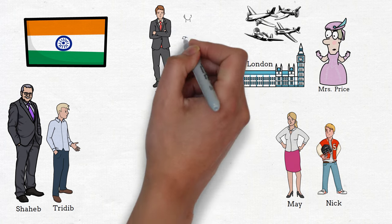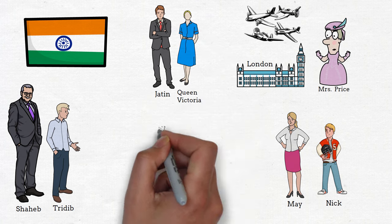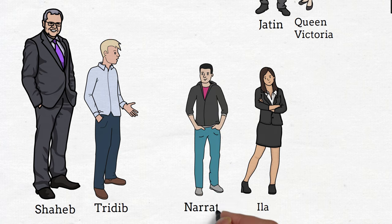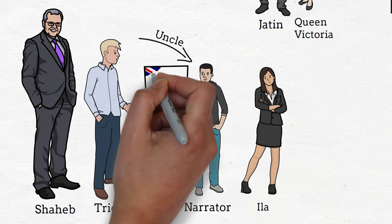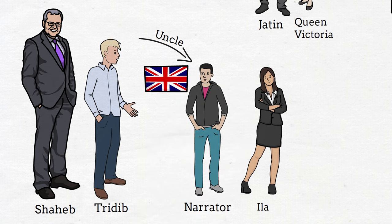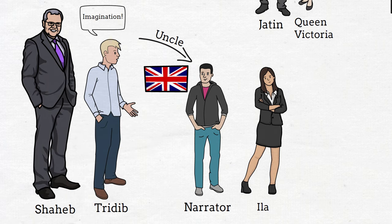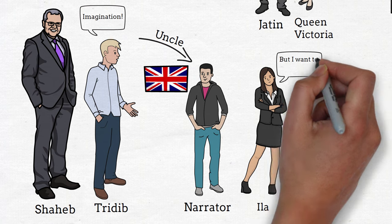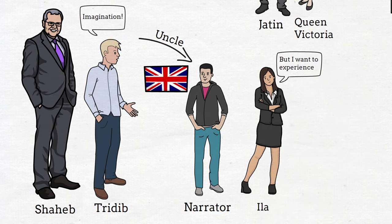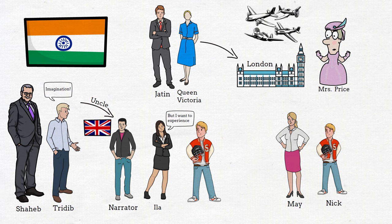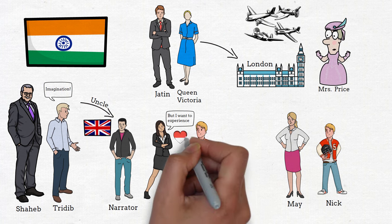After returning, we learn that Jatin gets married to a girl named Queen Victoria and they have a daughter named Ila. On the other hand, Tridib develops a great influence on the narrator. Tridib is his uncle and often tells him stories of war and the world. The narrator, who has never been out of Kolkata, is fascinated by Tridib's stories of London. Tridib used to say that the real world is that of imagination. Whereas Ila does not believe in Tridib's logic of imagination — Ila wants to roam the world. Eventually, Ila's family goes to London where she befriends Mrs. Price's son Nick, and as the novel moves forward, Ila gets into a love affair with Nick.